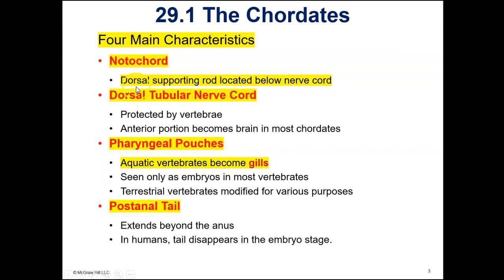A notochord is a dorsal supporting rod located below the nerve cord. In most chordates, the notochord becomes the bony vertebrae that surround the spinal cord. But in some chordates, the notochord just remains a supporting rod — it doesn't form into vertebrae.